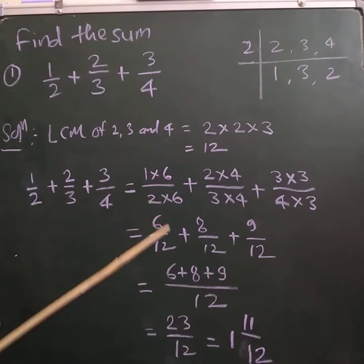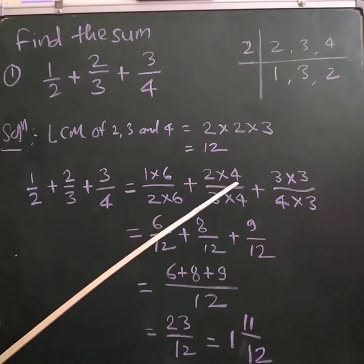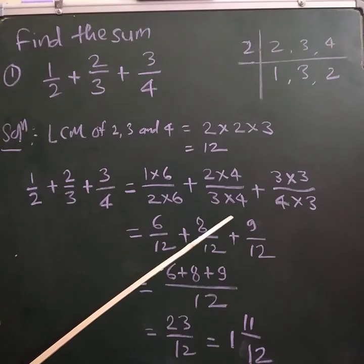So that we get denominator 12. In the second fraction 2/3, we have to multiply both numerator and denominator by 4. So 2 × 4 divided by 3 × 4.